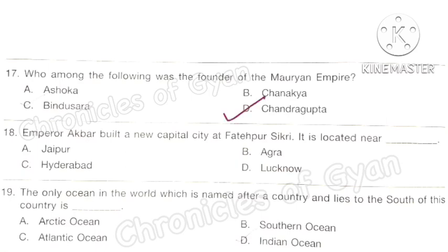Question 18: Emperor Akbar built a new capital city at Fatehpur Sikri. It is located near which city? The correct answer is option B: Agra. Question 19: The only ocean in the world named after a country, which lies to the south of that country, is which ocean? The correct answer is option D: Indian Ocean.